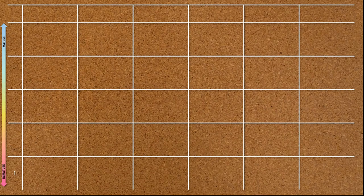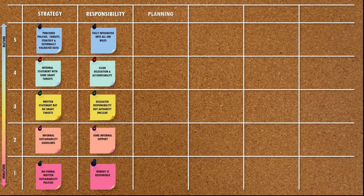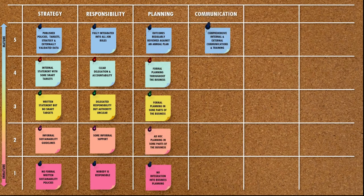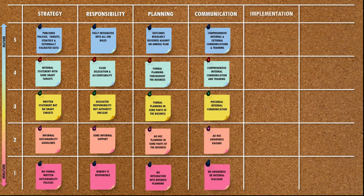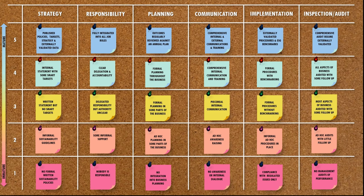If you're looking to improve the sustainability performance of your business, here's a simple tool that can be used to identify how mature your organization is on a scale of one to five — one being the least mature and five being the most mature. Review the statements for strategy, responsibility, planning, communication, implementation, and the checking and corrective actions or inspection and audit regimes that you undertake.